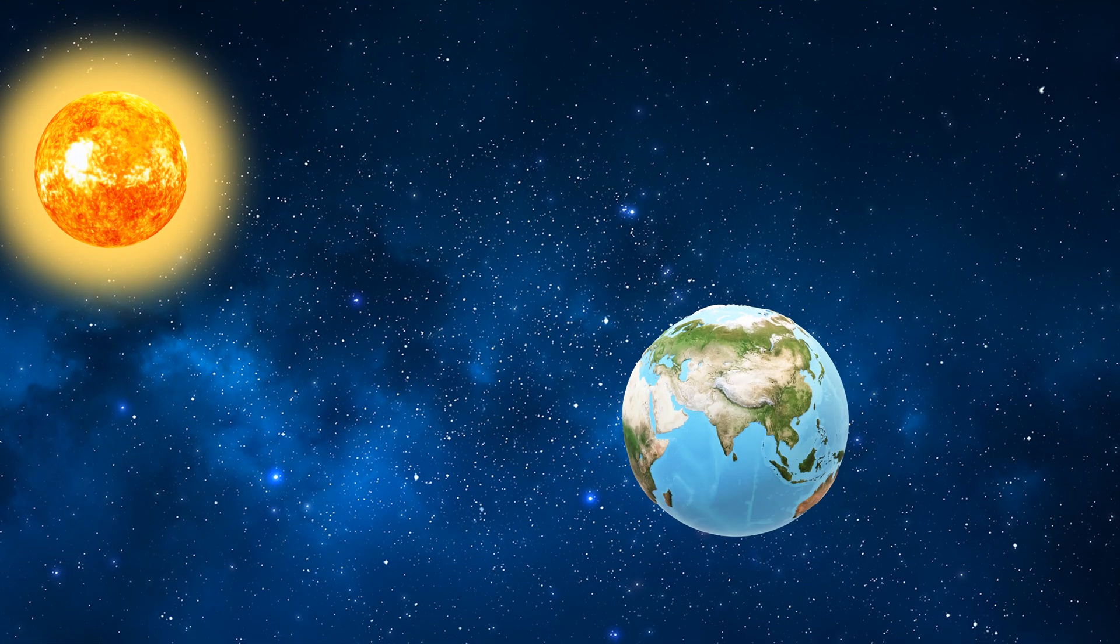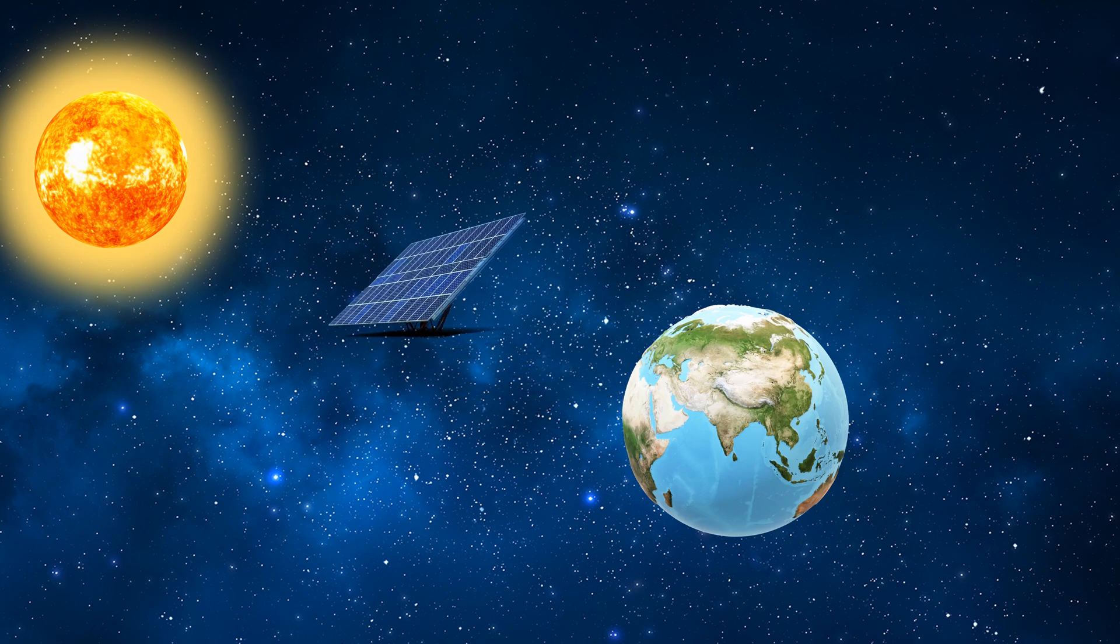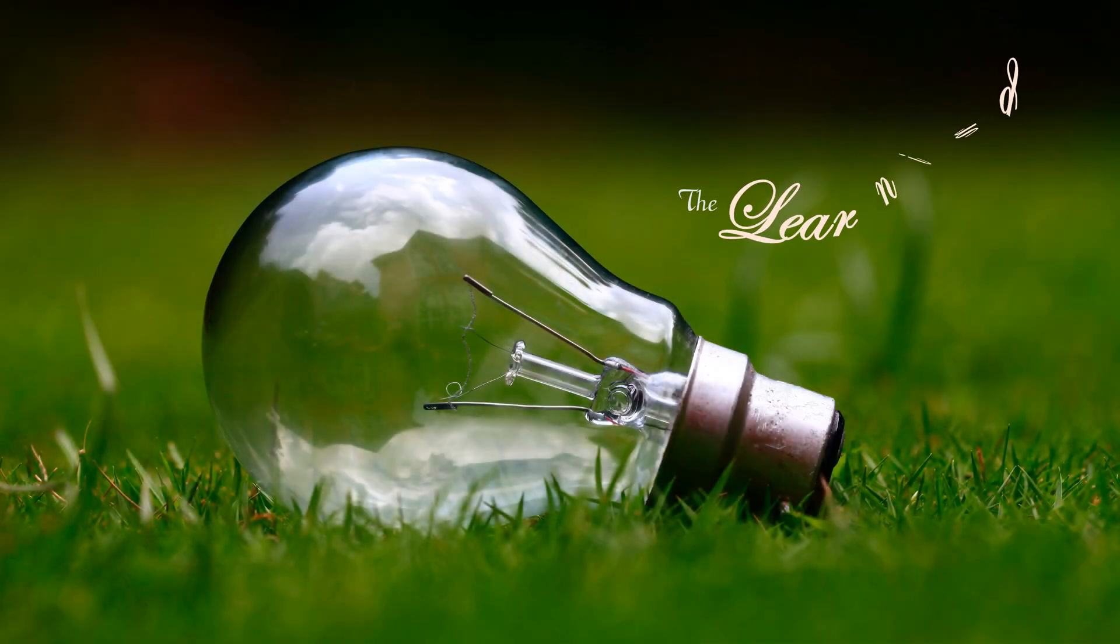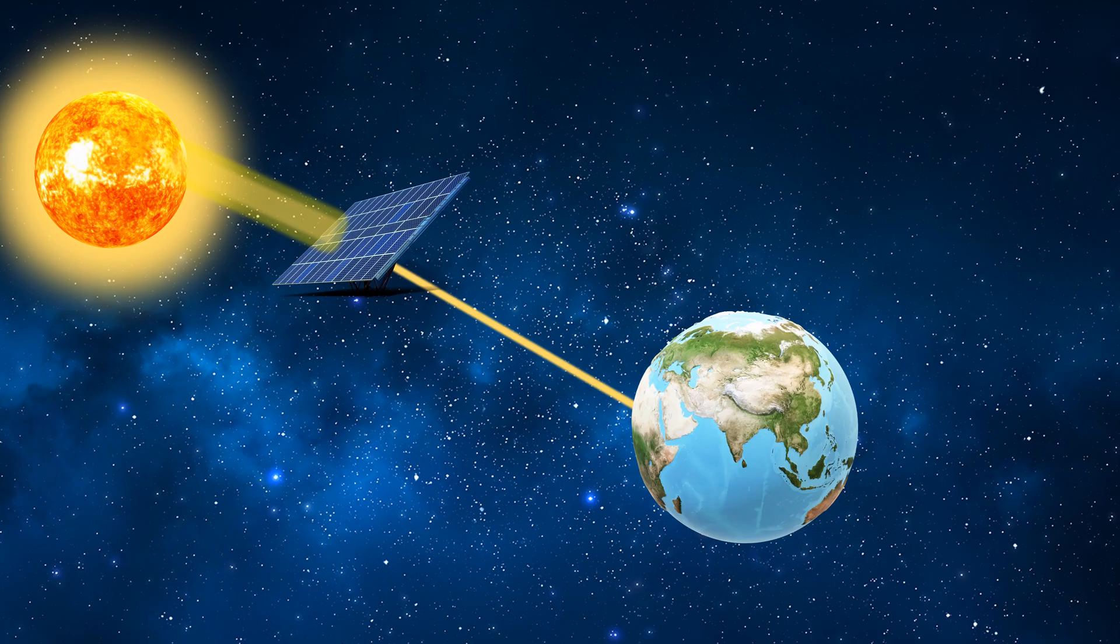So what if we collect the solar power up in space and beam it down to the surface? Since clouds, atmosphere and nighttime are absent in space, satellite-based solar panels would be able to capture and transmit more energy than normal solar panels on earth.